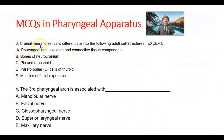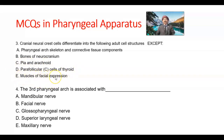Question number 3. The cranial neural crest cells differentiate into the following adult cell structures — except what? Options include: pharyngeal arch skeleton and connective tissue components, bones of the neurocranium that form the skull, pia mater and arachnoid mater (meninges), the parafollicular C cells of the thyroid, and muscles of facial expression. All are from cranial neural crest cells except the muscles of facial expression.